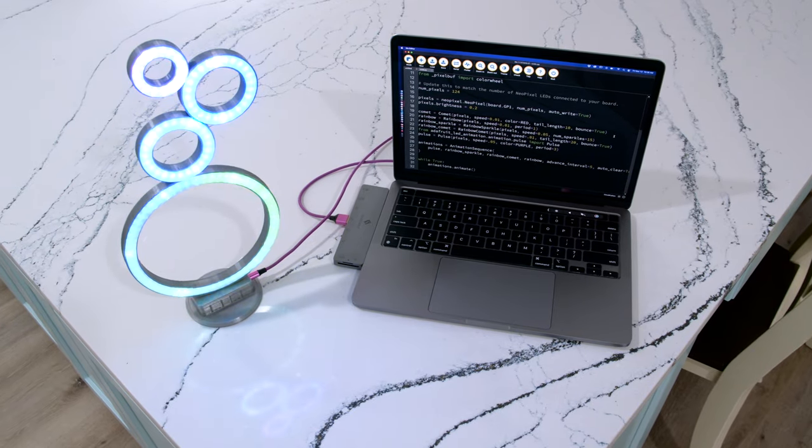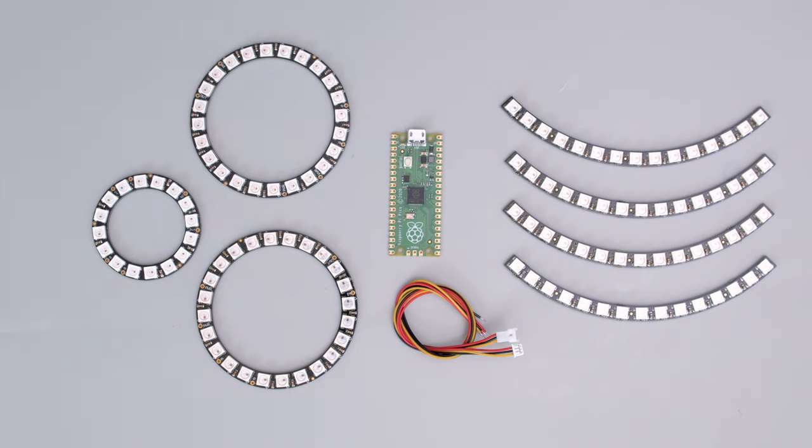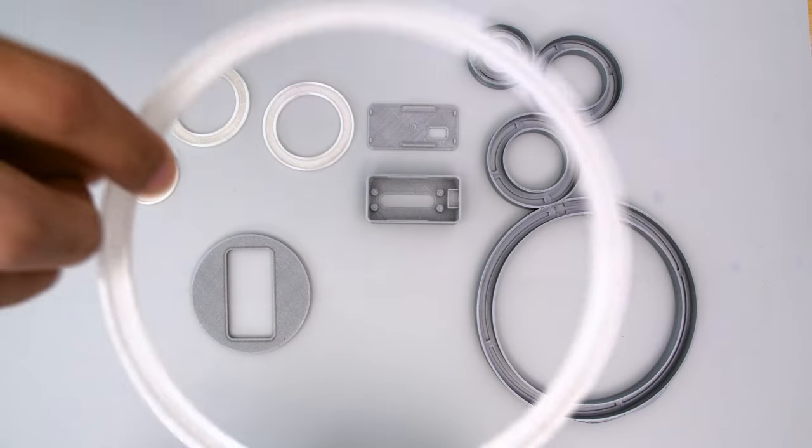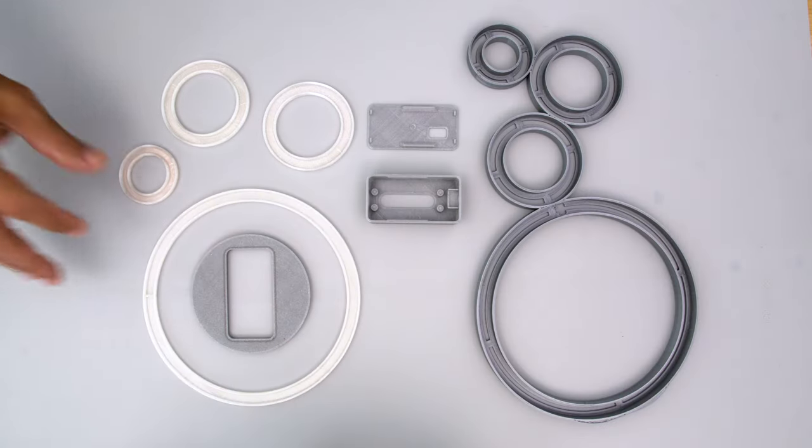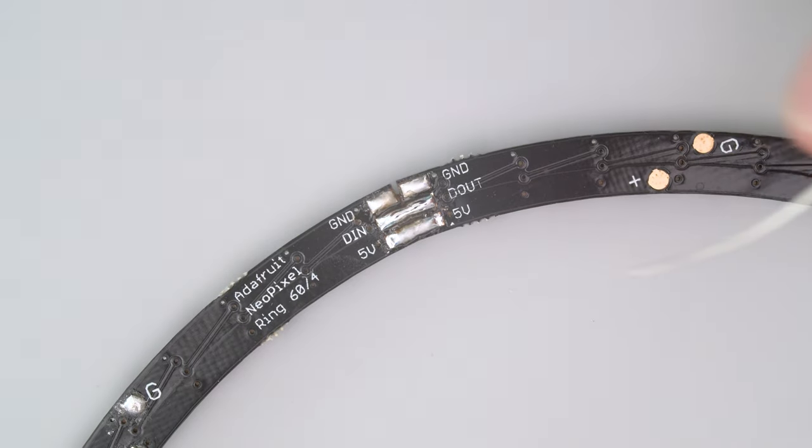It's really the best way to get neopixel animations going in CircuitPython. You can get the parts to build this project; links are in the description. The 3D printed parts are printed using PLA without any supports and they snap fit together.